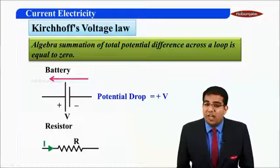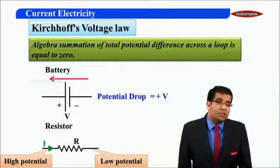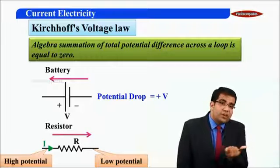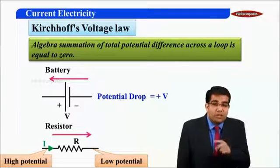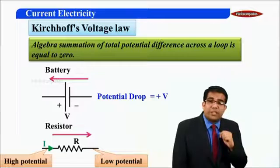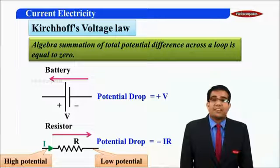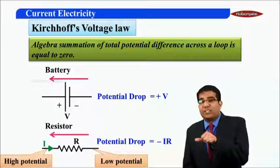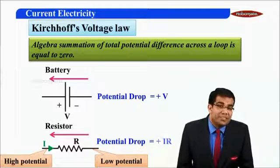I have a resistor R through which current I is flowing. We know that current flows from high potential towards low potential. If I move in the direction of current, I will have a loss because current flows from high to low potential, so the potential drop is minus IR. And if I move against the direction of current in the resistor, I am moving from low to high, so I will have a gain of plus IR.